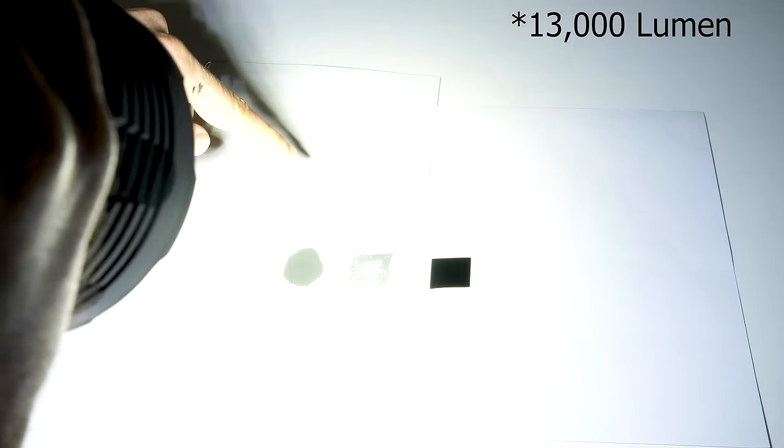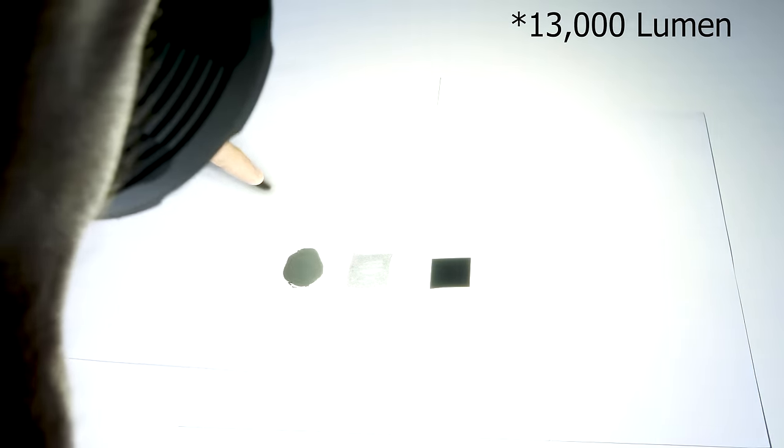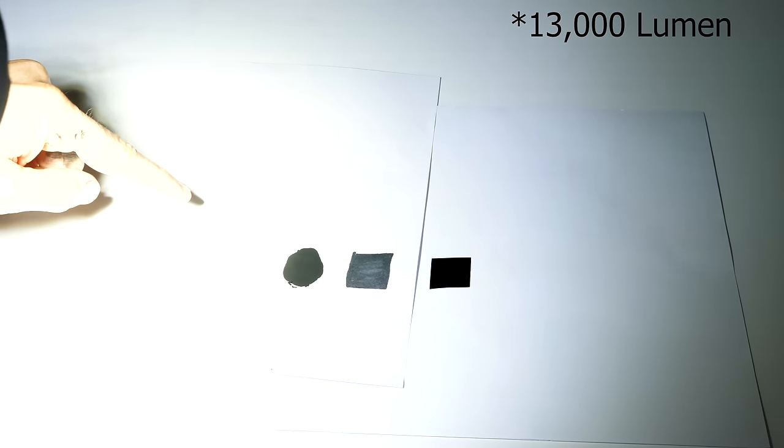13,000 lumen. Holy cow. Look, the Sharpie marker now just almost completely turns white. Same with the black 2.0. You get a total reflection here, but then when I move it over this one, still just as black as can be.